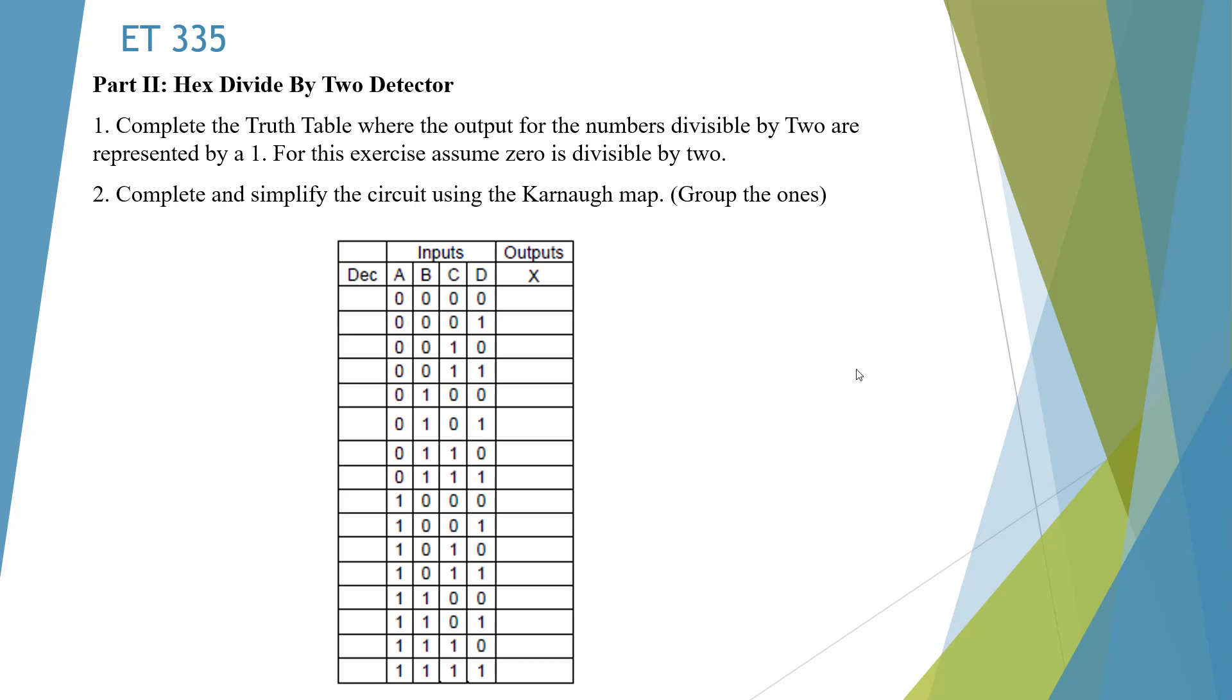Okay, we're going to create a hexadecimal divide by 2 detector for part 2. First thing we need to do is put in our decimal number. So this is going to be 0 and this is going to be 15. So 0 is going to be 1. Assume a 0.